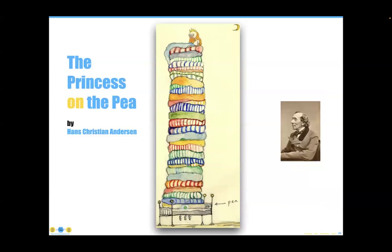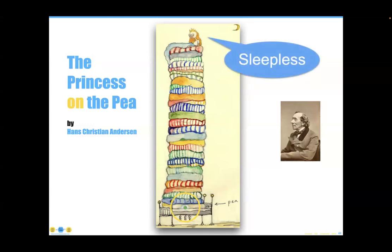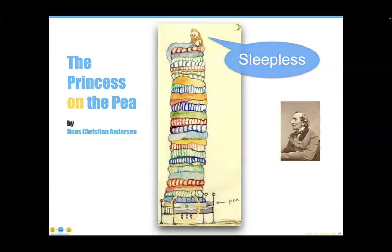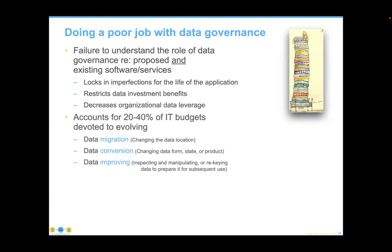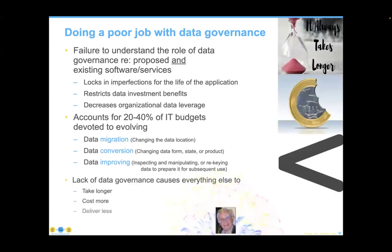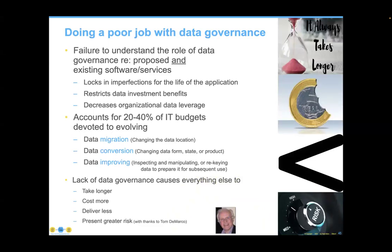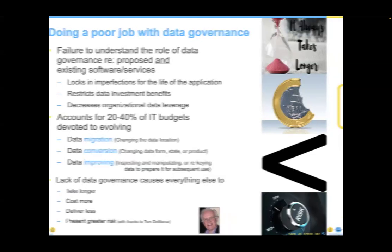It's important to make sure that data in your organization works well, because data imperfections are like the princess on the pea — they will stick with you for a very long time. Failure to understand the role of data governance regarding software and existing services locks in imperfections for the life of the application. It restricts additional data investment benefits, decreases organizational data leverage, and accounts for 20 to 40 percent of IT budgets migrating, converting, and improving data. Lack of data governance causes everything to take longer, cost more, deliver less, and present greater risk.